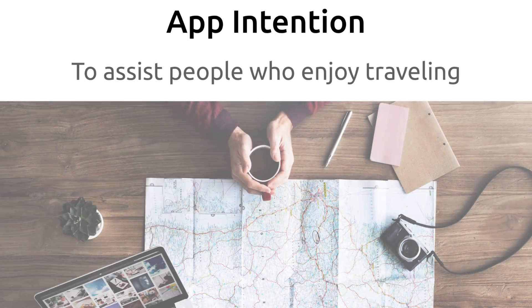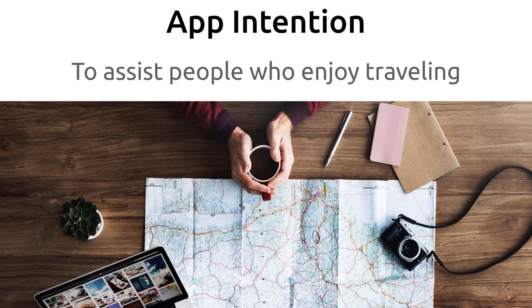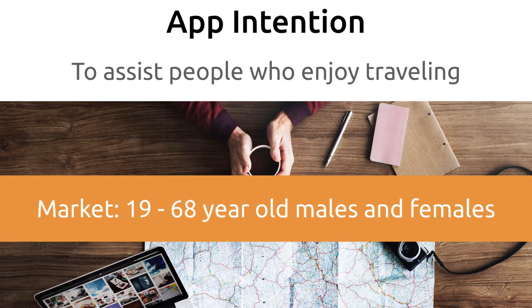As with the previous videos that relate to design, I can't stress enough how important it is that the app's intention is well established. We said the app's intention is to assist people who enjoy traveling. So everything about our app — the design, the colors, the fonts, and all the features — should communicate this intention. From the short research I've done, our market is an equal amount of males and females between the ages of 19 and 68 years old, so it's a pretty broad market. If you're unfamiliar with intention and markets and how they relate to design, I encourage you to go back and watch my video on app design.